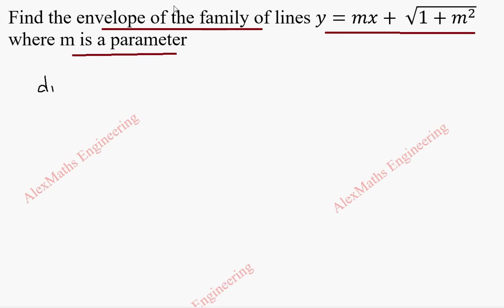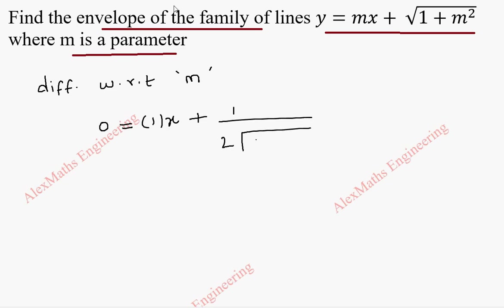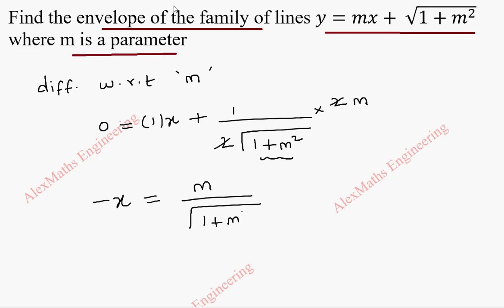As a first step, we are going to find the differentiation with respect to the parameter m. Other than m, remaining are constants, so y is a constant and its differentiation is 0. For mx, the differentiation of m is 1 and the constant x stays as is. For √(1 + m²), we get 1 / (2√(1 + m²)), and as per the chain rule, we differentiate inside, which gives 2m. After cancelling, we get x, which we take to the other side as −x = m / √(1 + m²).